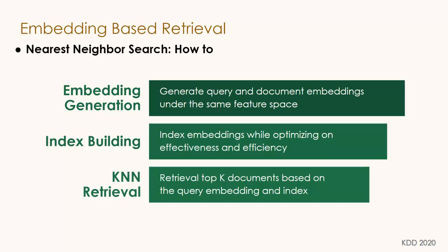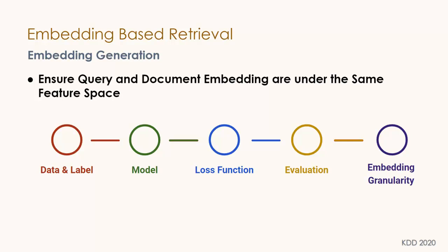Nearest neighbor search contains three steps: first, embedding generation — generating query and document embeddings in the same feature space; second, index building — indexing embeddings while optimizing for efficiency and effectiveness; and third, KNN retrieval — retrieving top-k documents based on the query embedding and index. Embedding generation covers five sub-topics: data and label generation, modeling, loss function definition, evaluation, and embedding granularity.